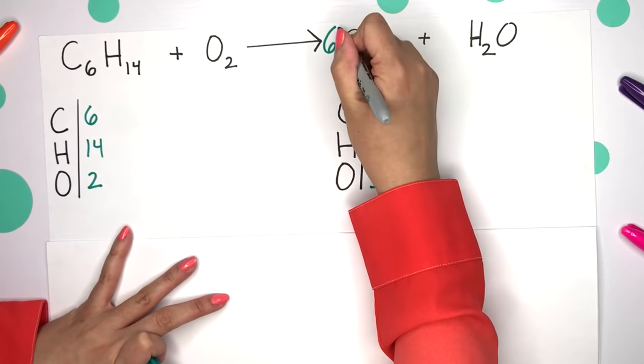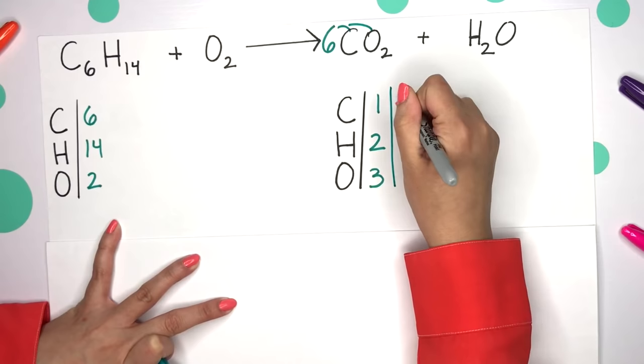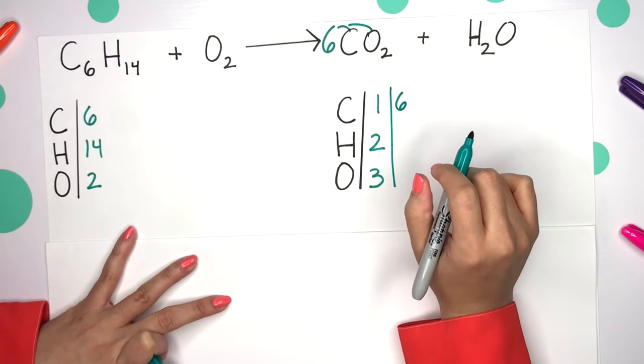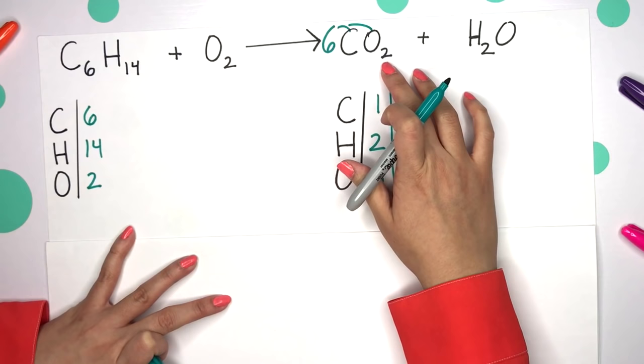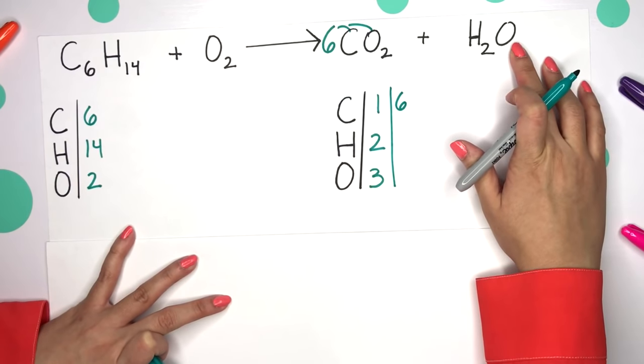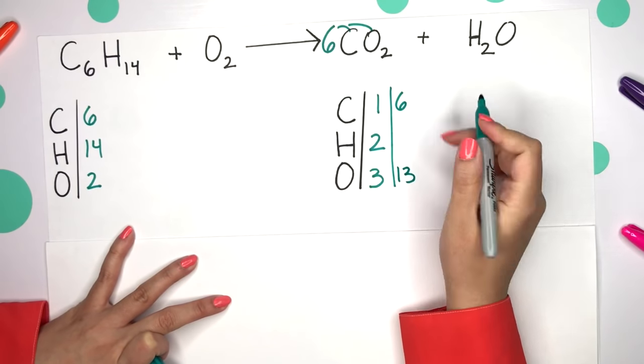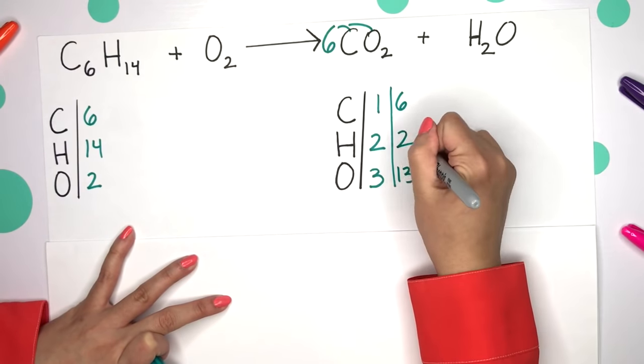So placing a six in front of that entire compound of CO2, note that this is kind of like you're distributing. And we now have six carbon, but let's recount all of those oxygen. So six times that two would give us 12 oxygen, plus this other one would give us 13. So we now have 13 oxygen, but still only two hydrogen.